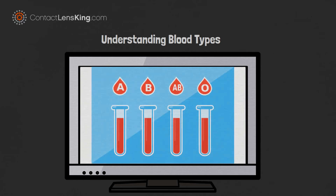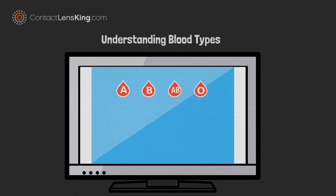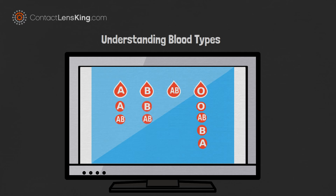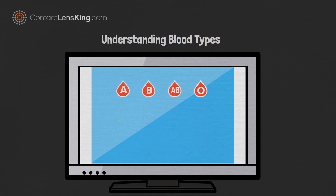When it comes to donating blood, only certain blood types are compatible with others. For instance, O negative is a universal donor. A can only donate to other A or AB types. B can only donate to other B or AB types. And only negative blood types can donate to negative recipients, but both positive and negative can donate to positive recipients.